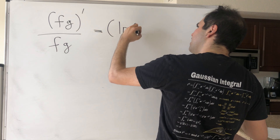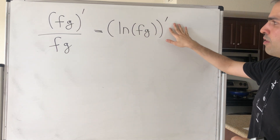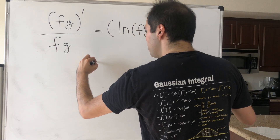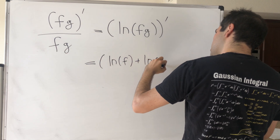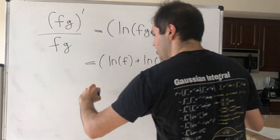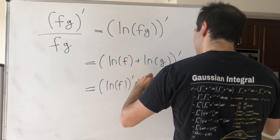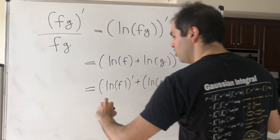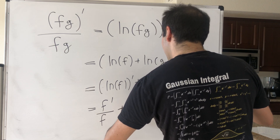...that's just the derivative of ln of fg. So ln of fg prime, and no absolute value because f and g are positive. But now by the properties of ln, this is ln of f plus ln of g, all prime. And by the sum rule of differentiation, this is ln of f prime plus ln of g prime, and again using the chain rule, that is f prime over f plus g prime over g.